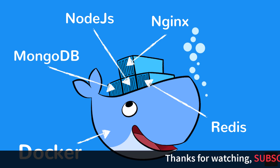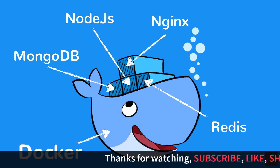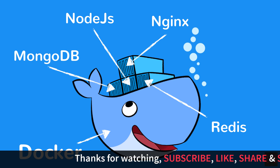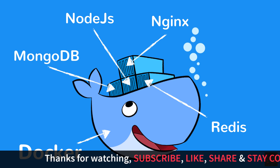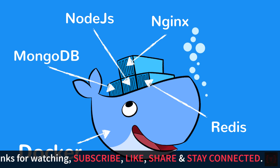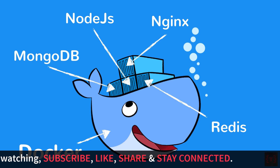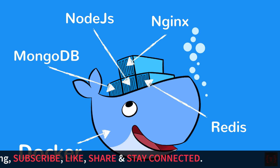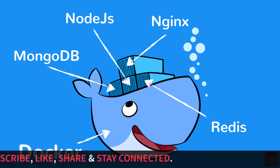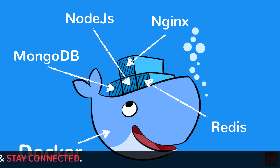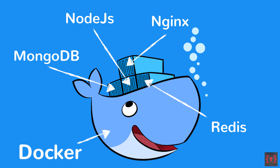One major benefit of Docker is that you can have independent containers for two Node.js applications where one uses a certain version of Node.js and the other uses a different version. There is no conflict between both containers because their environments are separate and they do not interfere with each other.